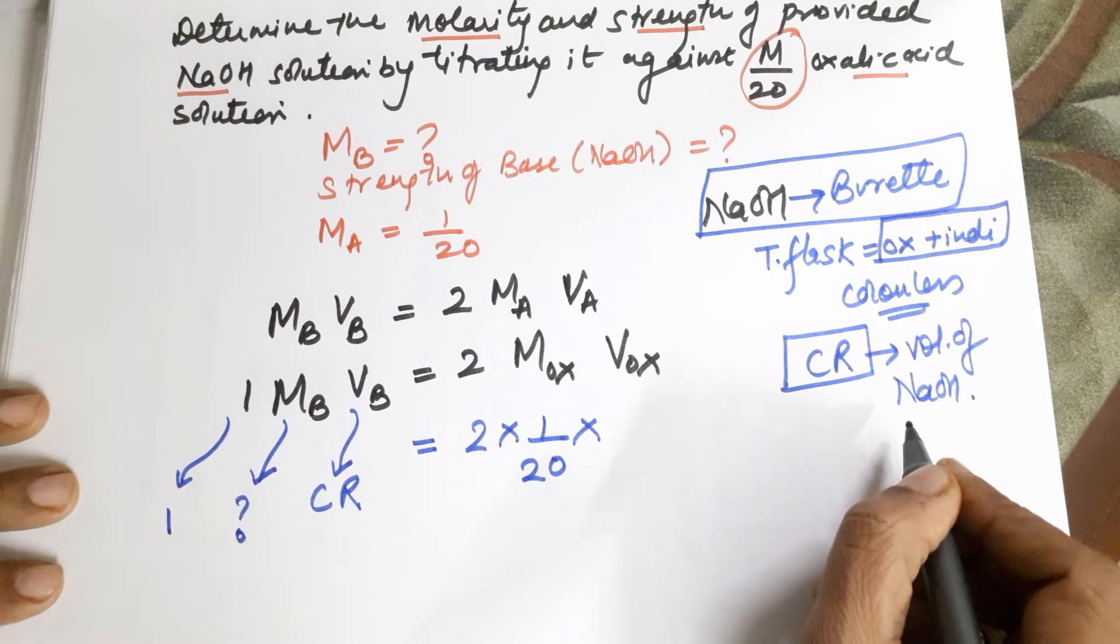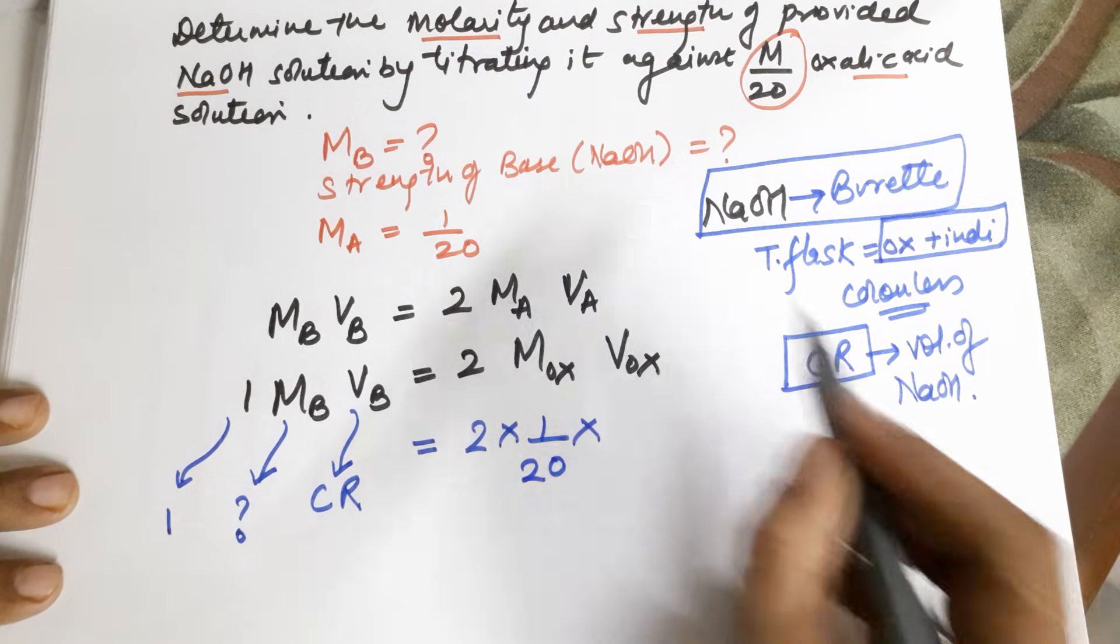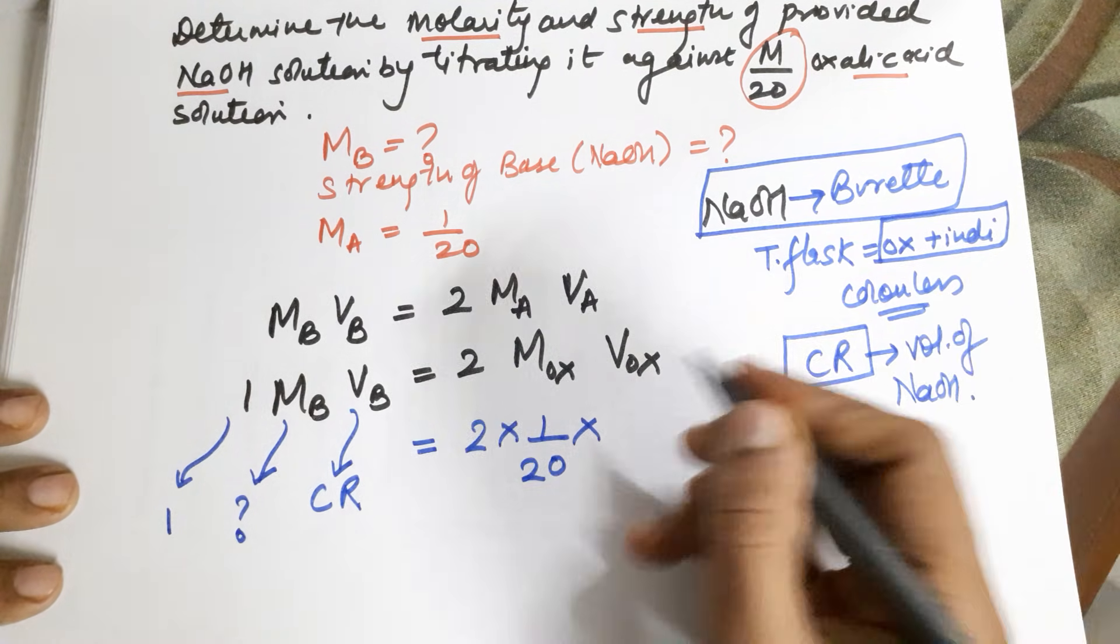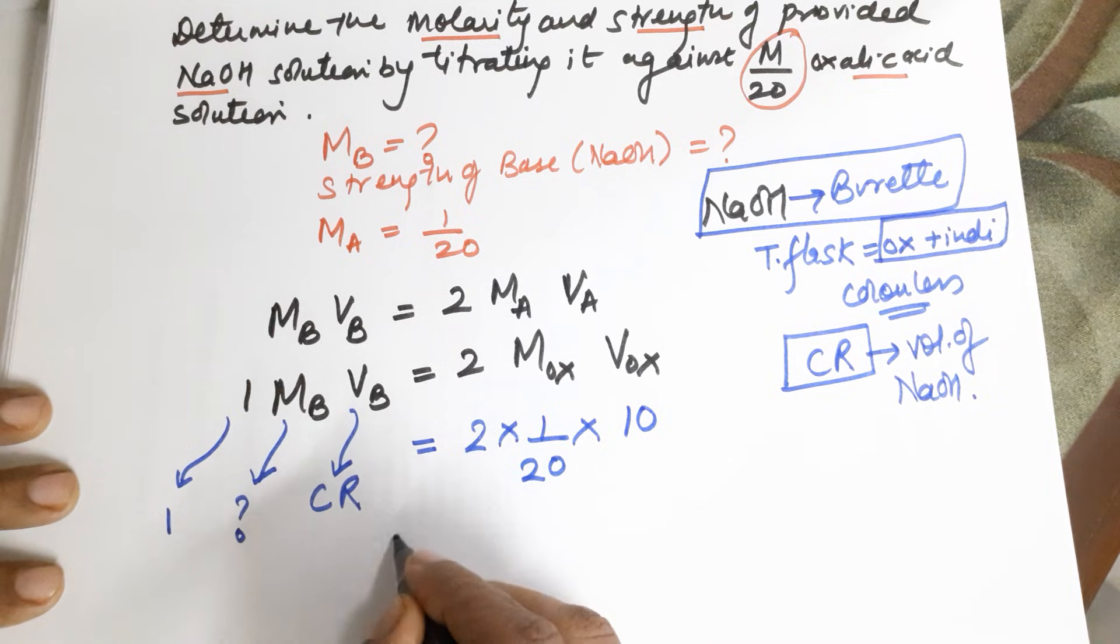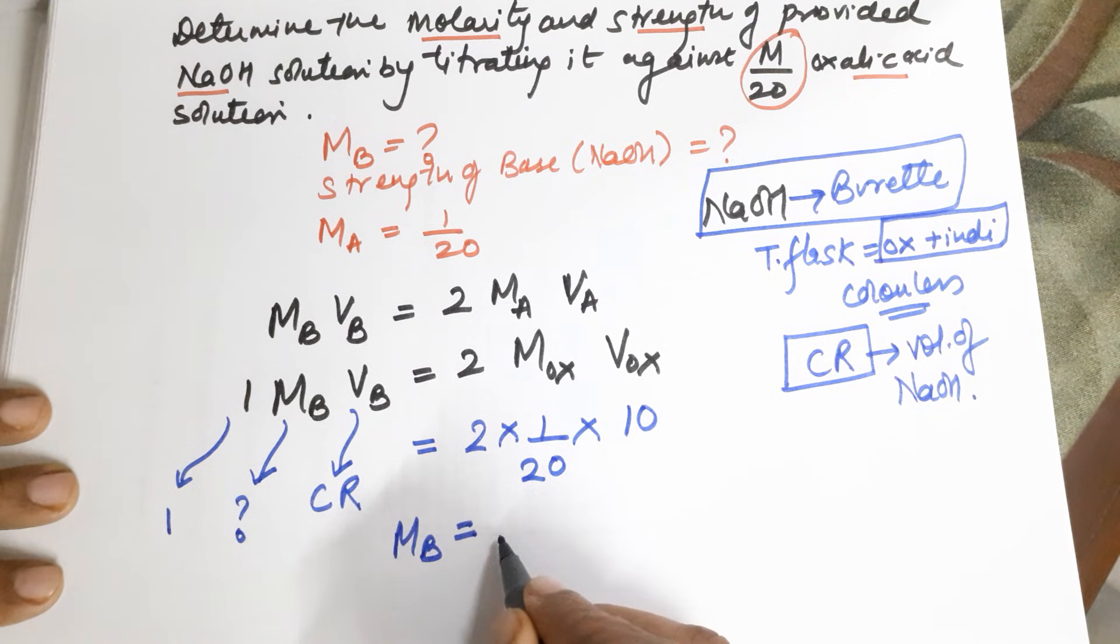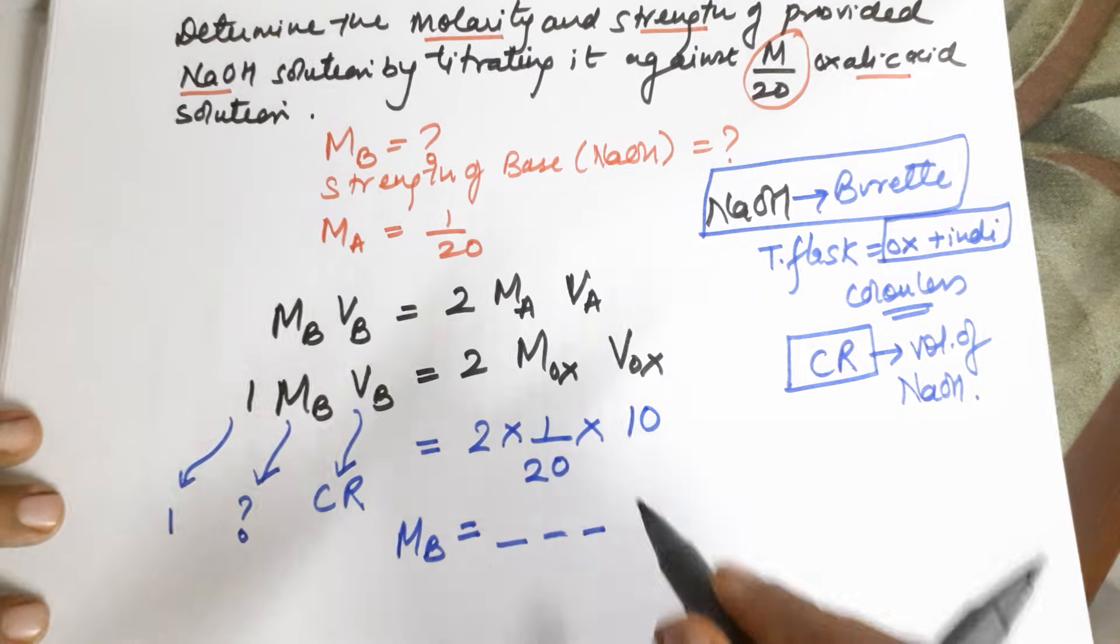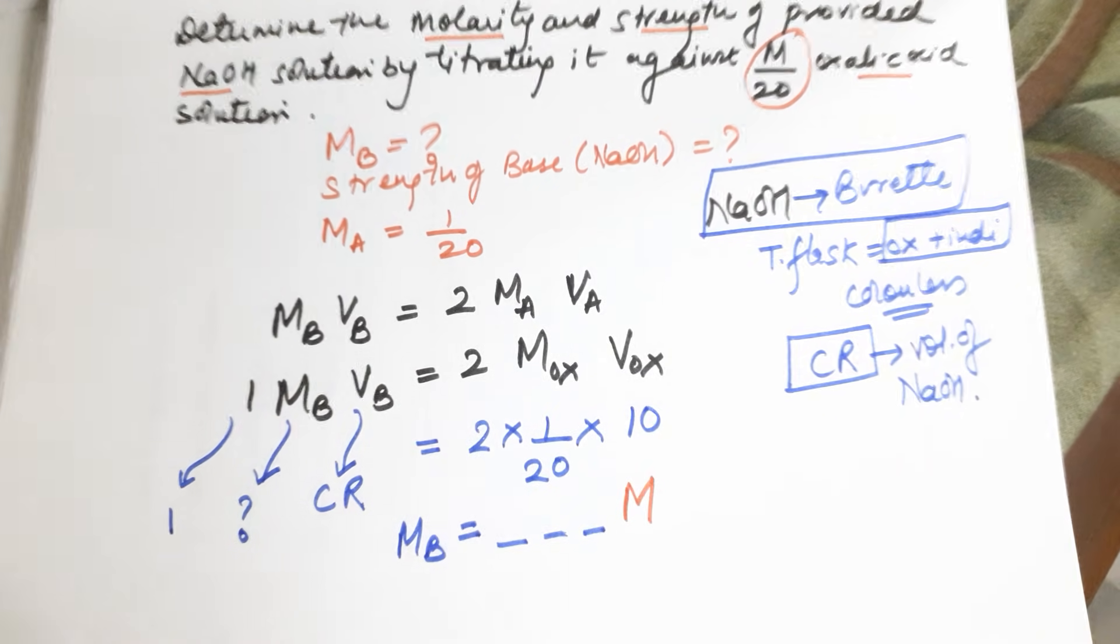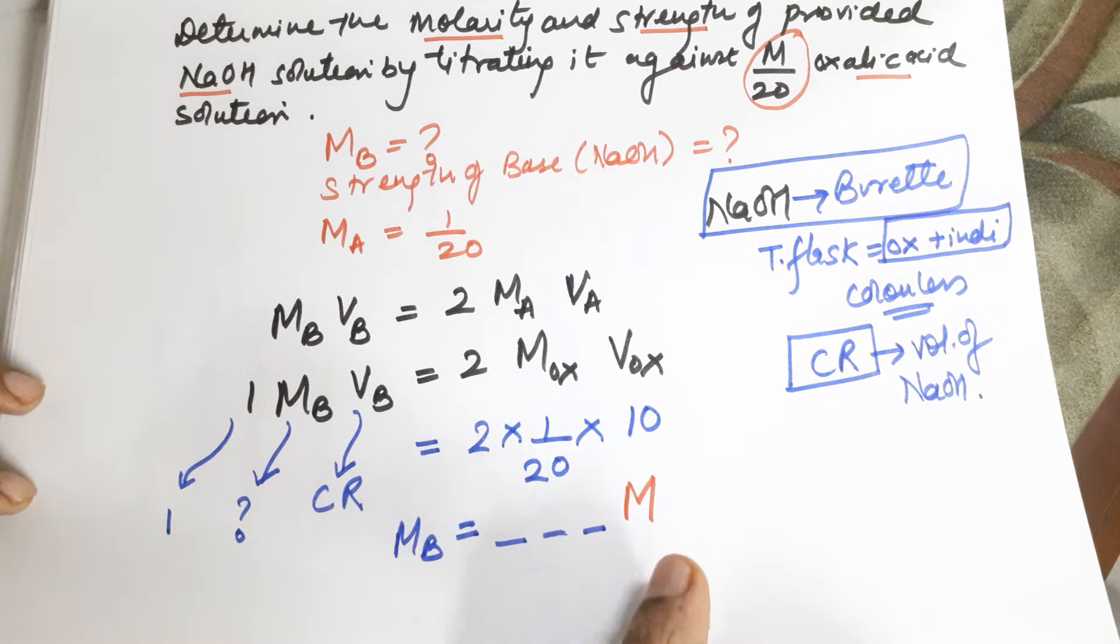Volume of oxalic acid would be how much? 10 or 20 or 25 depending on what is the size of pipette that is provided. So normally in my school you have it as 10, so I am substituting it as 10. From all this I can find out the molarity of the base. This molarity of the base is the molarity of NaOH. Please do not round it off and don't forget to put M as the subscript behind it, which is for the molarity.